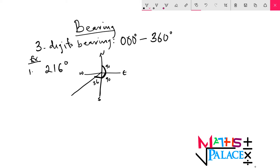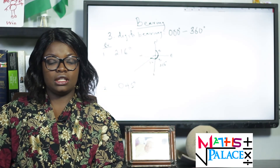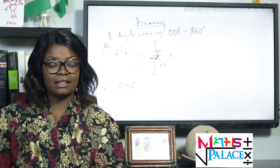So 90 plus 90 plus 36 gives us 216 degrees. The total angle from the north to this point is 216 degrees in total. Another example is 045. Now 045 is the same as 45, but we add the zero to make it three digits. Remember, the name is three-digit bearing, so it must have three digits — 045.